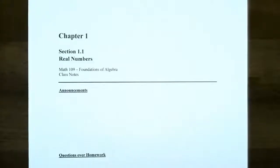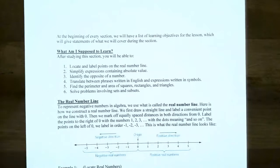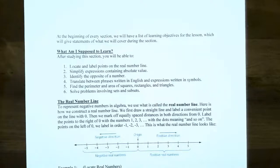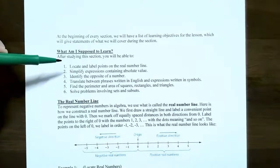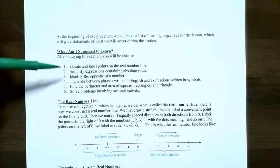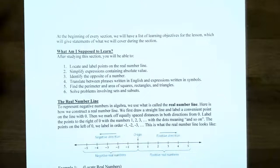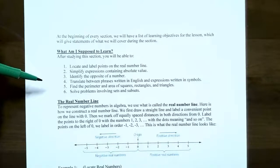Hi everyone, it's Professor Pemberton. In this video we're going to talk about real numbers. Since this is our first section, every single section will start off with a list of statements about what the video will cover. We're going to talk about how to locate and label points on a real number line, simplify expressions containing the absolute value, identify the opposite of a number, and translate between English phrases and expressions written in symbols.